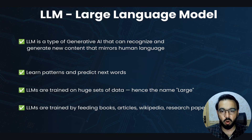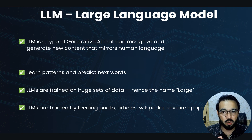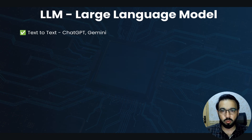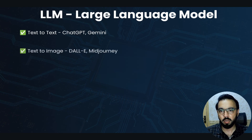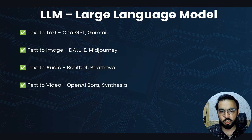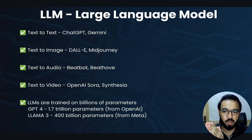LLMs are trained by feeding books, articles, Wikipedia, research papers, and everything in text form — all pushed into the LLM model so it can learn patterns and generate new data. Large language models can do text-to-text generation — examples are ChatGPT and Gemini. Text-to-image examples are DALL-E or Midjourney. Text-to-audio examples include Beatbot, and text-to-video examples include OpenAI Sora and Synthesia.